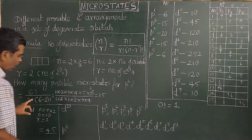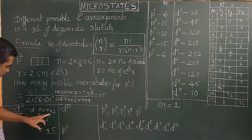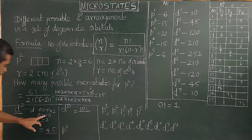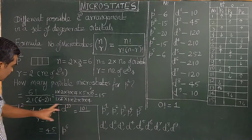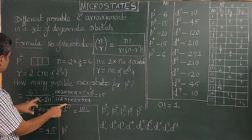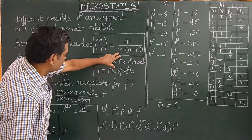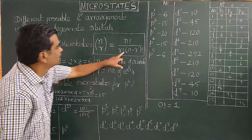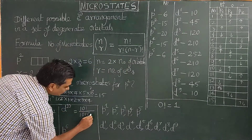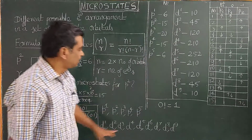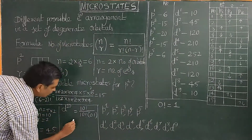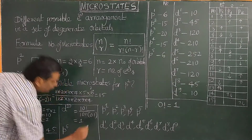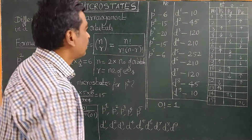Similarly, for D10 configuration: N = 10, R = 10. Substituting into the formula gives 10! / (10! × (10−10)!) = 10! / (10! × 0!). Since 0! = 1, the number of microstates equals 1. There is only one possible microstate for D10 configuration.